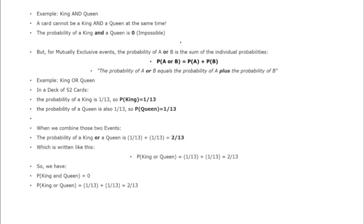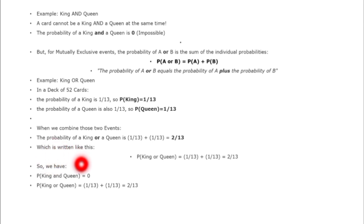If you consider P(king AND queen), it is obviously zero — you can't choose king and queen at the same time. But either you can choose a king or a queen at a probability of 2/13.